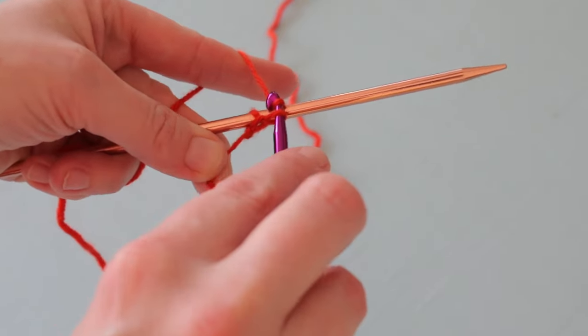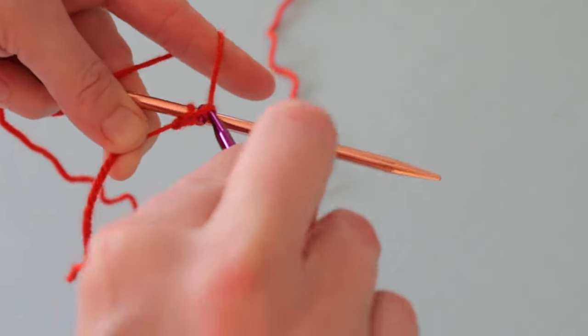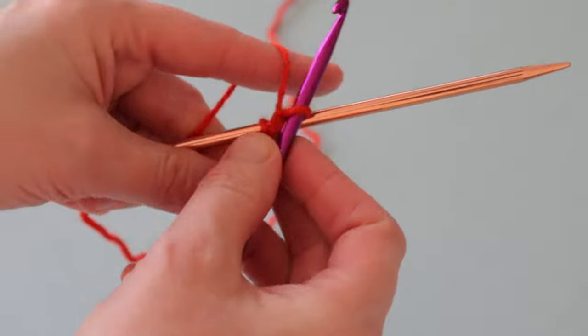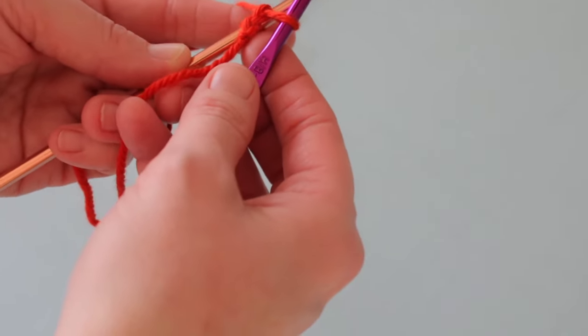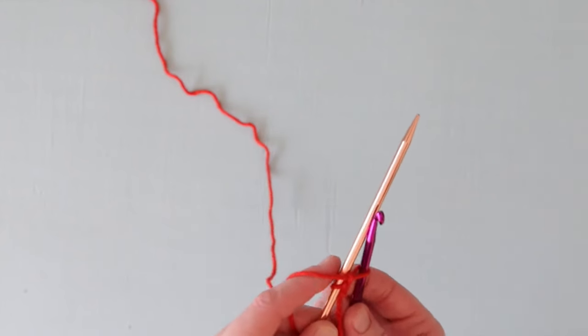Like with a lot of cast-ons, the first stitch or two you cast on is the hardest, setting up the cast-on with those first few loops, but then it's pretty much the same thing from there and this cast-on is no exception.